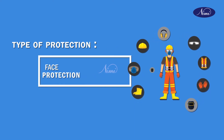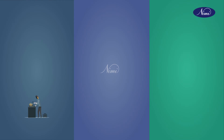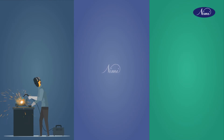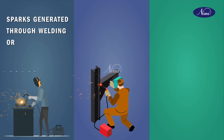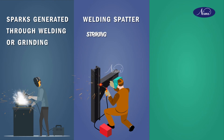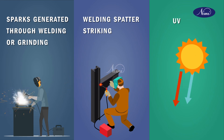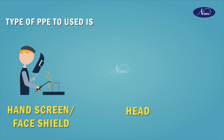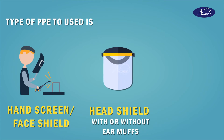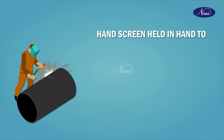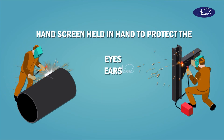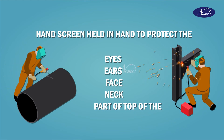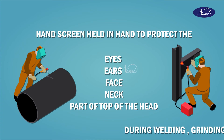The next type of protection is face protection. The hazards are sparks generated during welding or grinding, welding spatter strikings, or UV rays. The type of PPE to be used are a hand screen, face shield, head shield with or without ear muff, helmets with screen for welders, and hand screens held in hand to provide protection to eyes, ears, face, neck, and part of the top of the head during welding, grinding, and cutting processes.